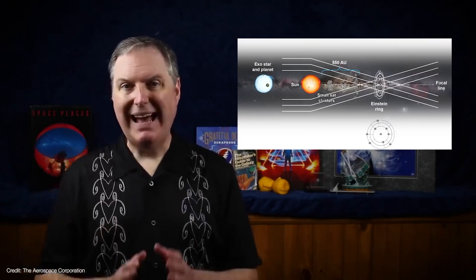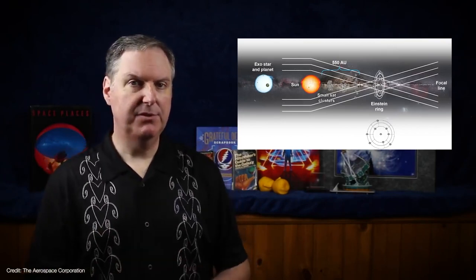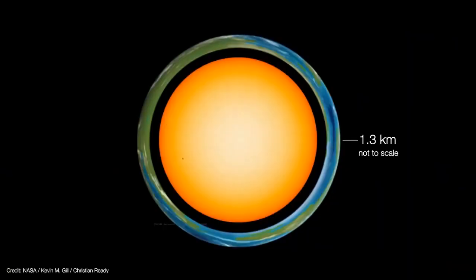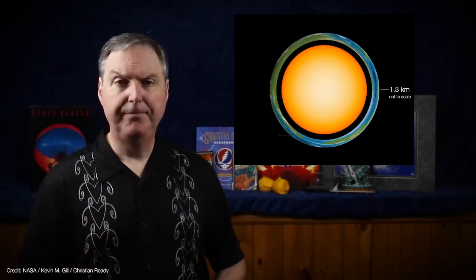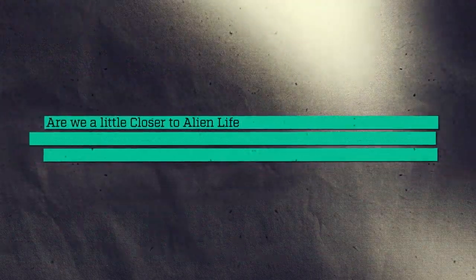With these issues addressed, let's consider what a telescope actually sees from the SGL's focus. The Einstein ring is as thick as its image is wide. In our example, the ring is just 1.3 kilometers thick, therefore this illustration is way out of scale. Are we a little closer to alien life?